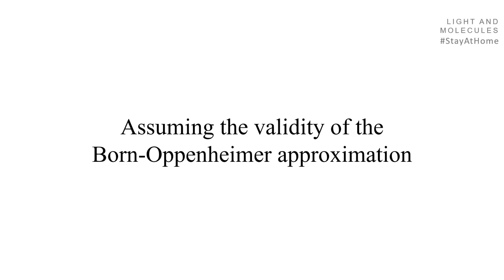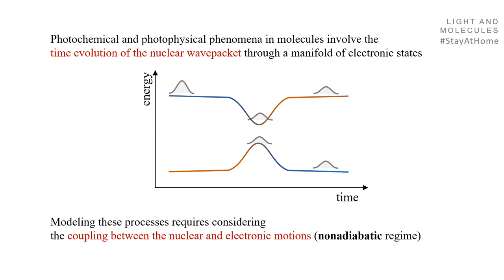First, we are going to assume the validity of the Born-Oppenheimer approximation throughout this talk and all the simulations shown. That means separating the two subsystems — electrons and nuclei — treating them separately, and recovering their interaction afterwards. Photochemical and photophysical phenomena in molecules involve the time evolution of a nuclear wave packet through a manifold of electronic states, and modeling this process requires considering the coupling between nuclear and electronic motions in the nonadiabatic regime.